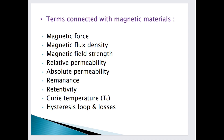Now the terms connected with magnetic materials. First is magnetic force, second is magnetic flux density, third is magnetic field strength, fourth is relative permeability of magnetic material, then absolute permeability, permeance, retentivity, Curie temperature, and hysteresis loop and losses. These are all the terms connected with magnetic materials and are very important.